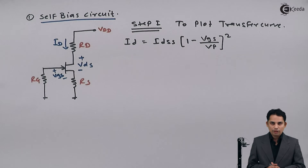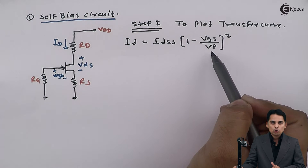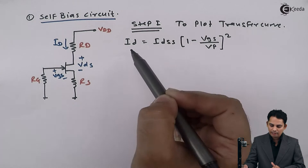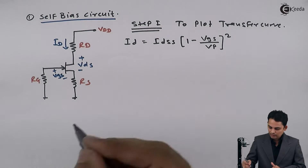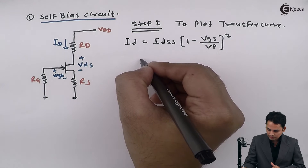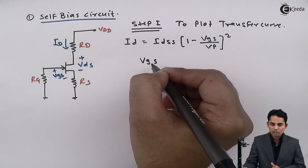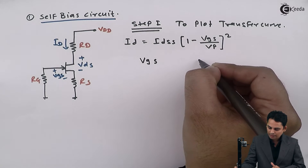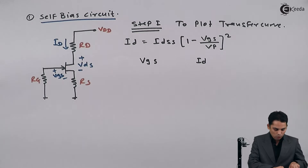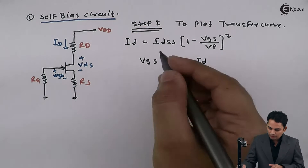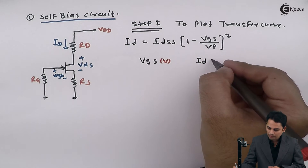What we are going to do is substitute values of Vgs in terms of Vp so that we will get values of Id in terms of Idss. We will write first Vgs and the corresponding value of Id. The value of Vgs will be in volts whereas the value of drain current will be in milliamperes.